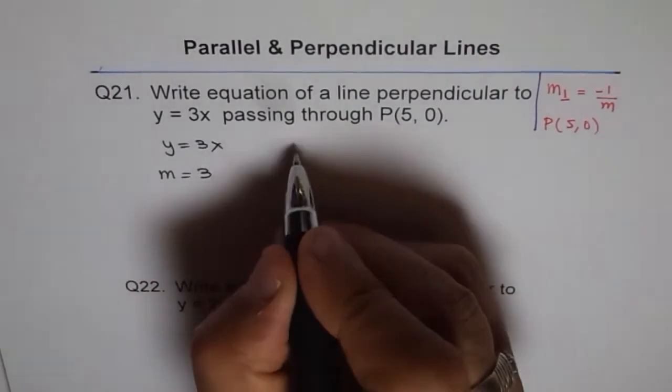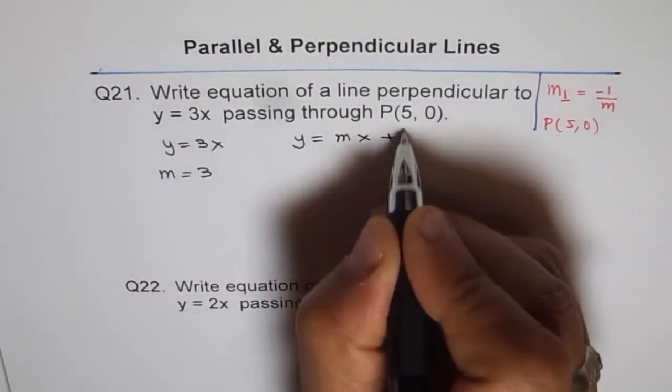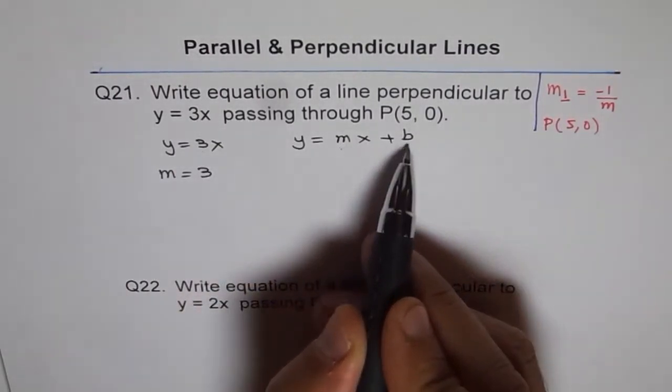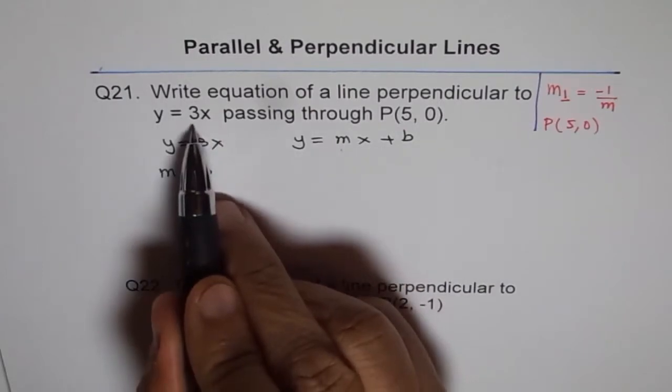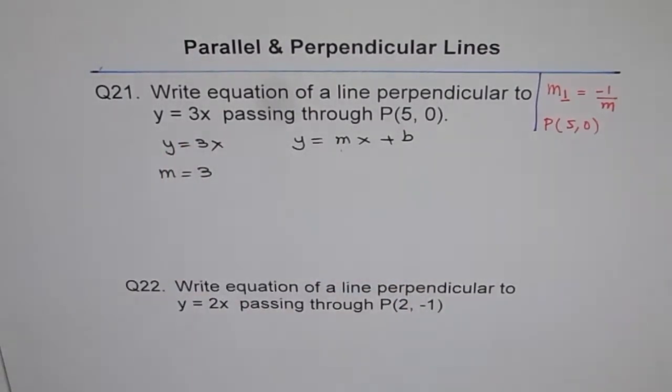Now, why you can read it? Because the equation is in the form of y equals mx plus b. Coefficient of x is the slope of the line. And this is y-intercept. And therefore, slope of the line is 3. 3 is the coefficient of x. So that is important to understand.